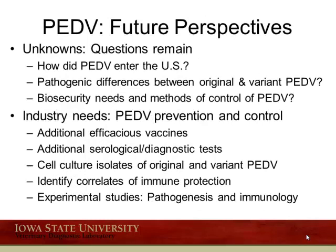Future perspectives for PED include several unknowns. How PED entered the U.S. still remains a high priority question, though one we may not be able to answer. What are the pathogenic differences between original and variant PED viruses? What additional biosecurity needs and methods of control will be solidly effective? For the industry, we need to improve prevention and control, develop additional efficacious vaccines and diagnostic tests, obtain cell culture isolates for experimental challenge studies in vaccinated swine, identify correlates of immune protection to know when an animal is protected post-infection or immunization, and conduct additional experimental studies.